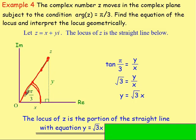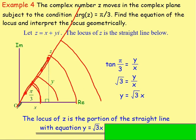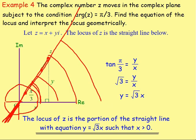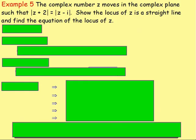The locus of z is the portion of the straight line y = √3·x going upward, but not the part going below the origin. Because the argument runs from 0 up to 180° and 0 down to −180°, going into negative x would give a different angle — not π/3. So we must state that x > 0.